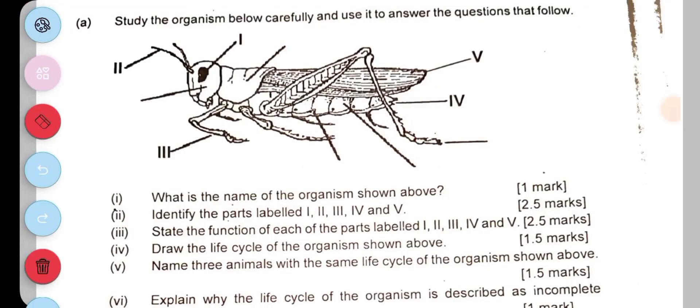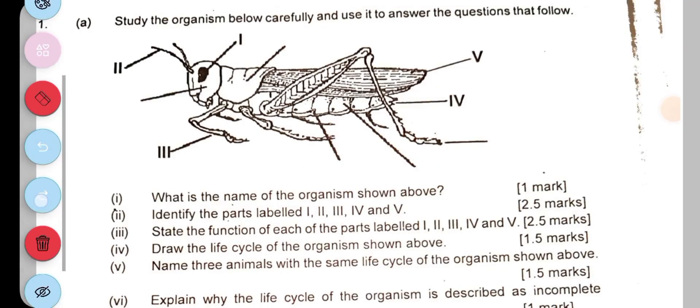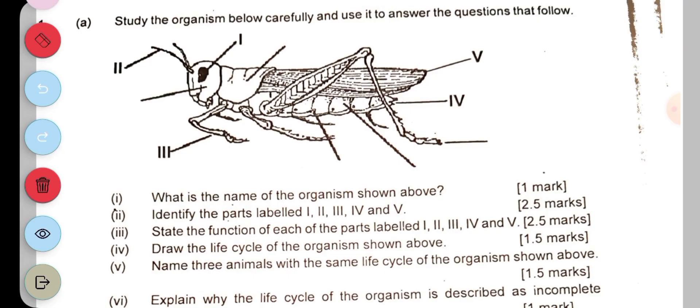The question says: study the organism below carefully and use it to answer the questions that follow. The first question asks what is the name of the organism shown above — this is a grasshopper.